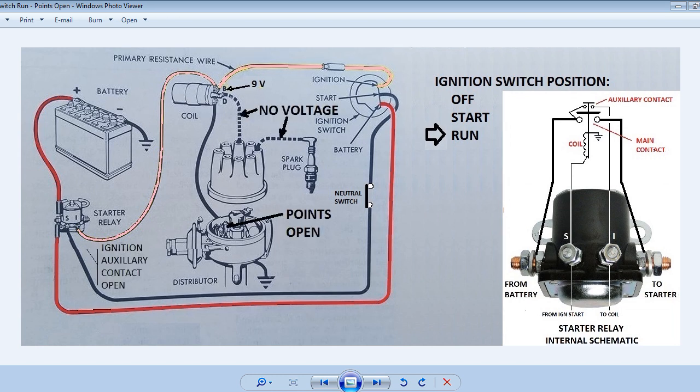In this diagram it will show what happens in the circuit when the points are open. When the points are open there is no ground return for the coil so there is no flow of electricity through the coil, resulting in no voltage being supplied to the spark plugs.